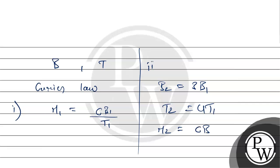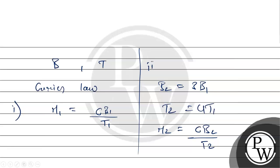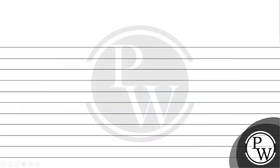Now, dividing these both equations, first equation and second equation. By dividing both equations we get M1/M2 = B1/B2 × T2/T1.